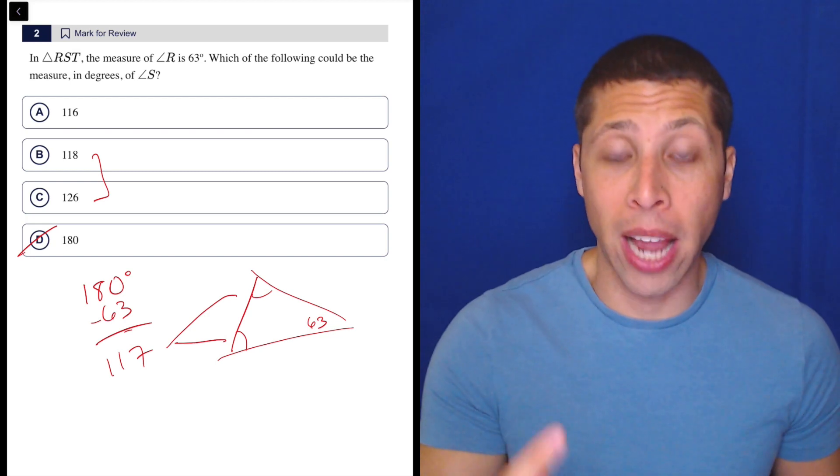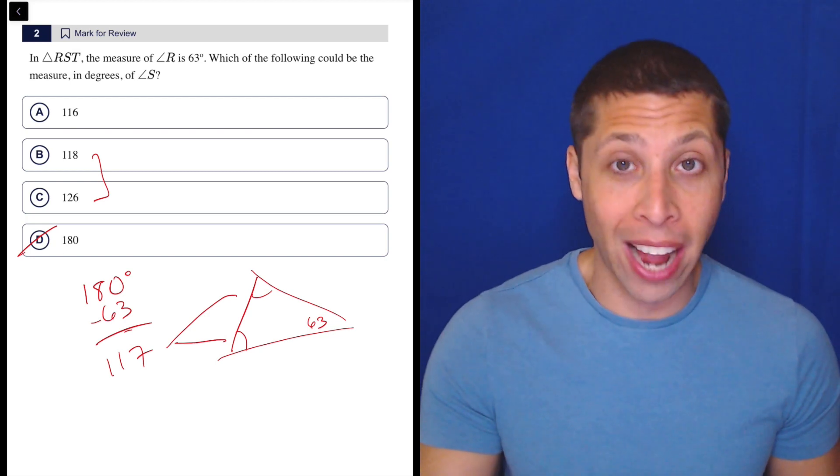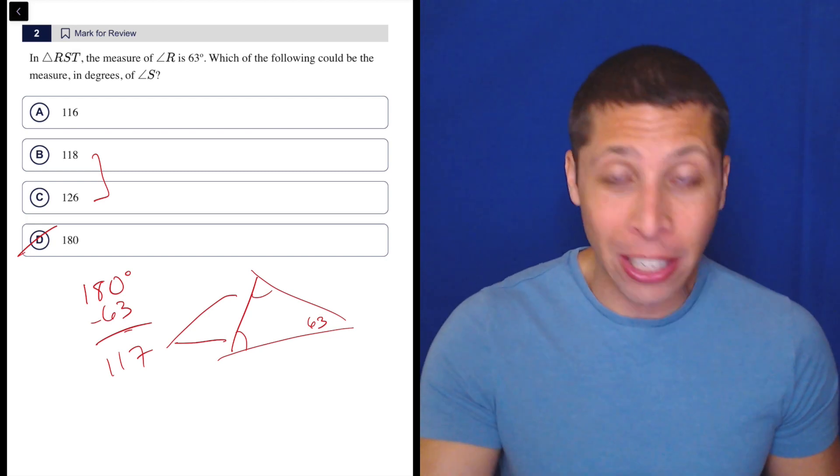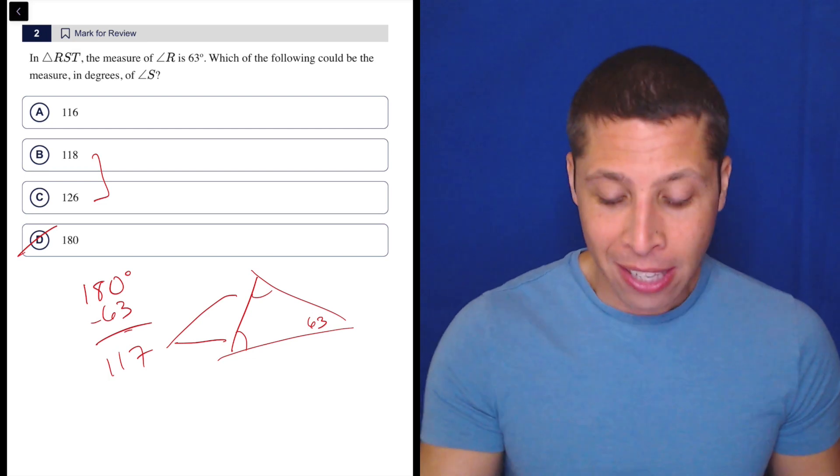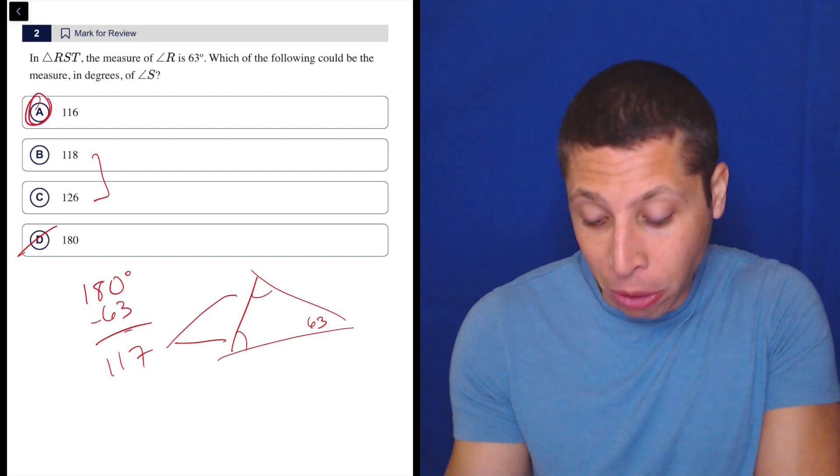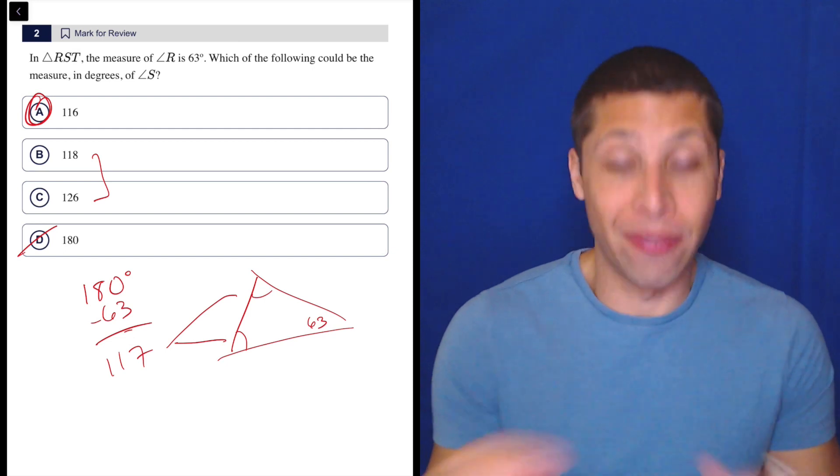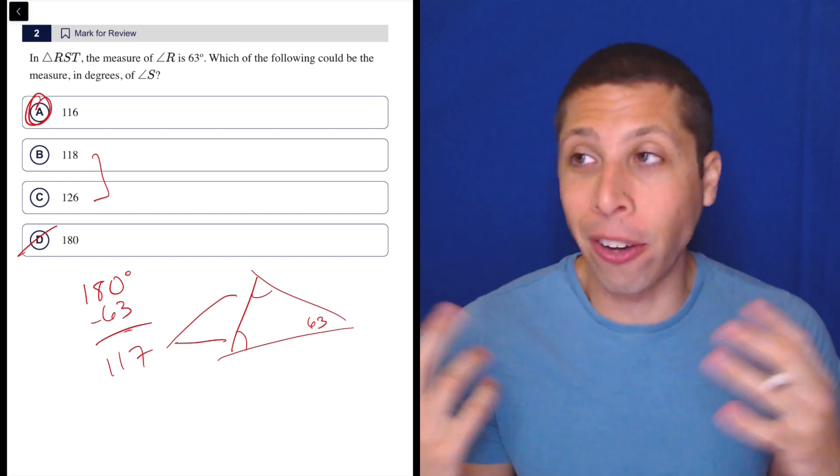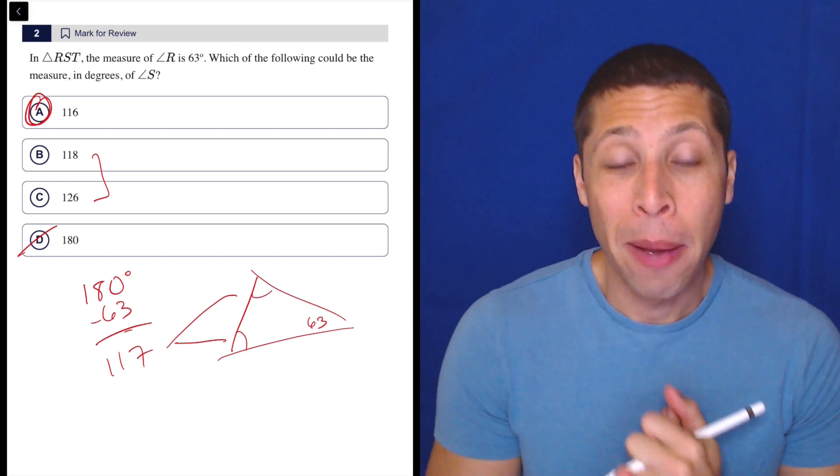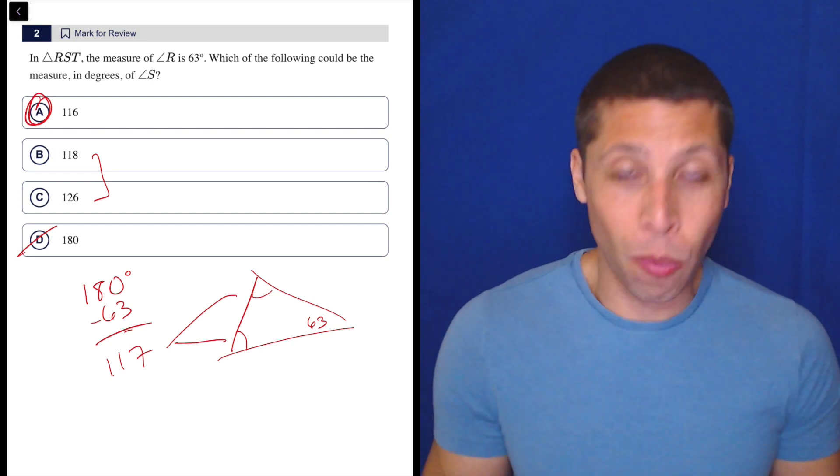But the other two, B and C, these would put us over the limit. So it is possible to have a triangle with a 118-degree angle or a 126-degree angle, but we only have 117 degrees left. So 116 is totally fine because we could have a very very skinny triangle, one-degree angle. That's fine. It could even be less than that if we want, but it can't be zero.